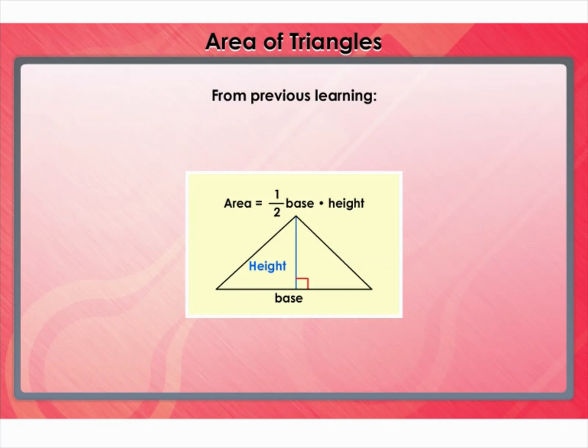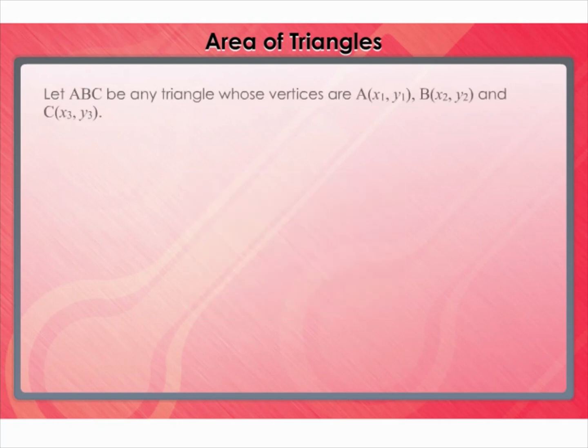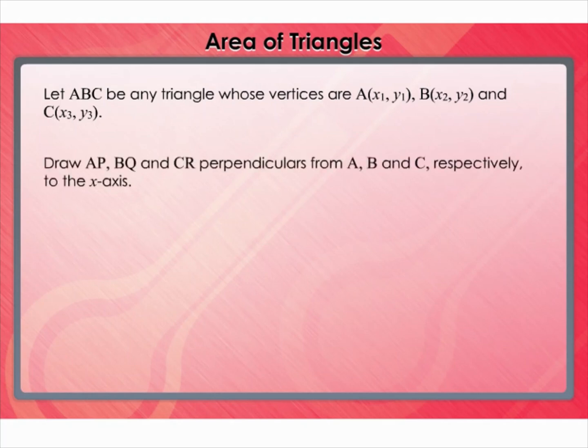Let ABC be any triangle whose vertices are A(x₁, y₁), B(x₂, y₂), and C(x₃, y₃). Draw AP, BQ, and CR perpendiculars from A, B, and C respectively to the x-axis.